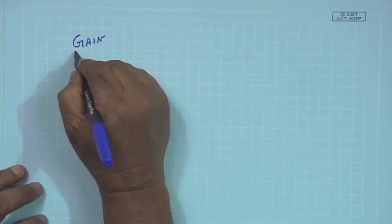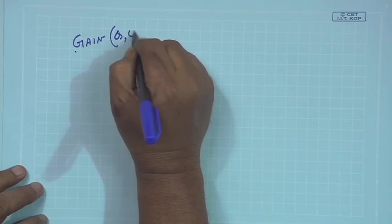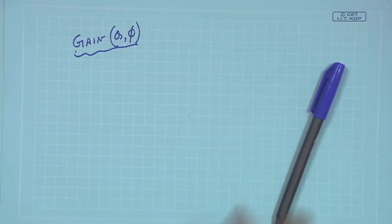A related quantity — another parameter of the antenna — is called gain. Gain is also an angular function. It is defined similarly: what is the radiation intensity? But its denominator is a bit different, because in directivity you do not find out whether the antenna is really radiating or not.